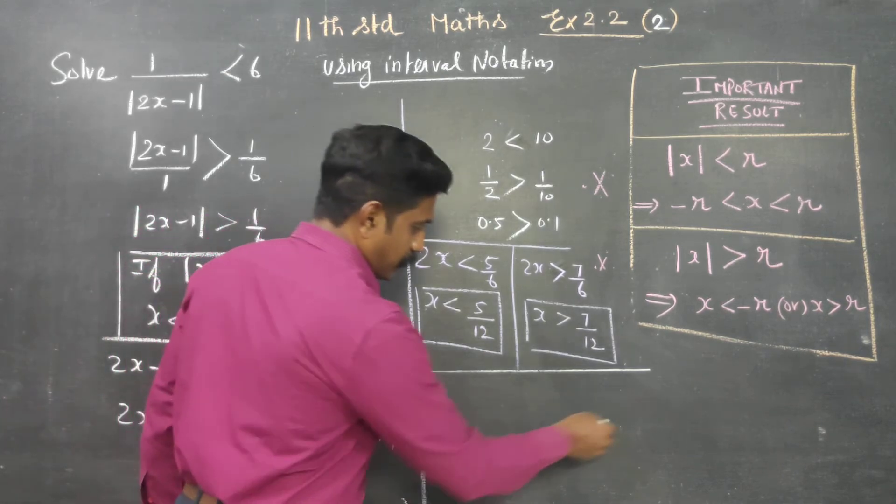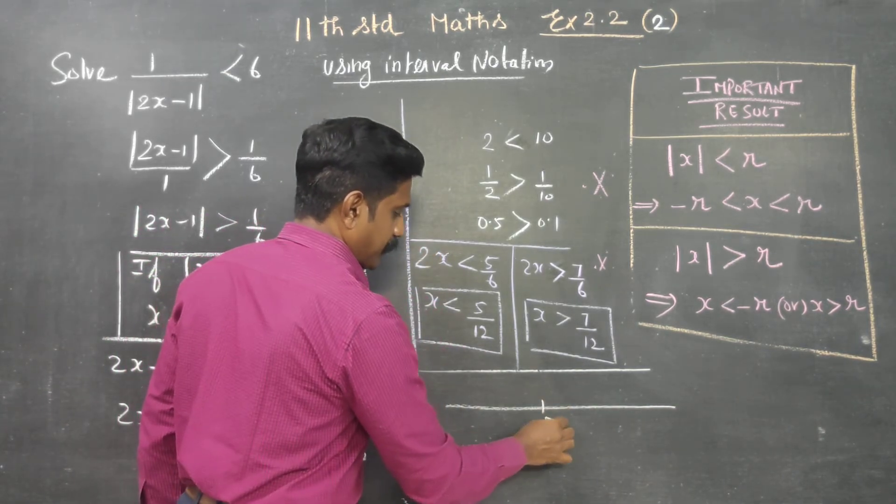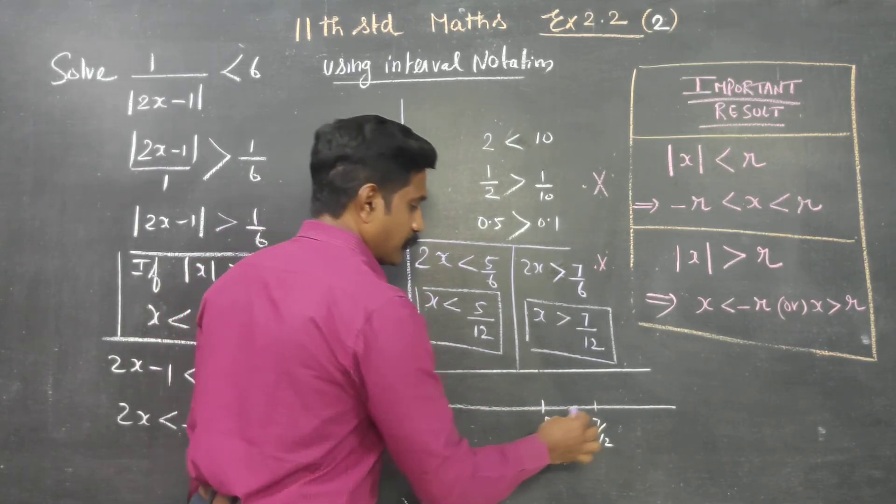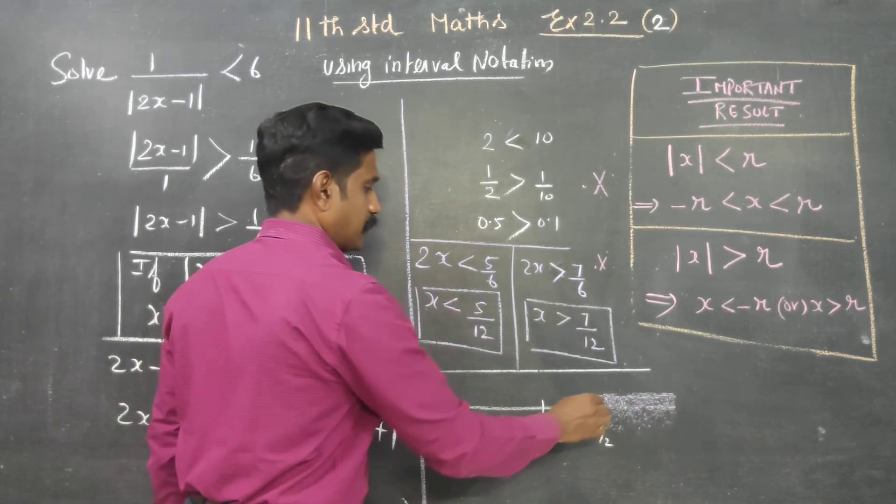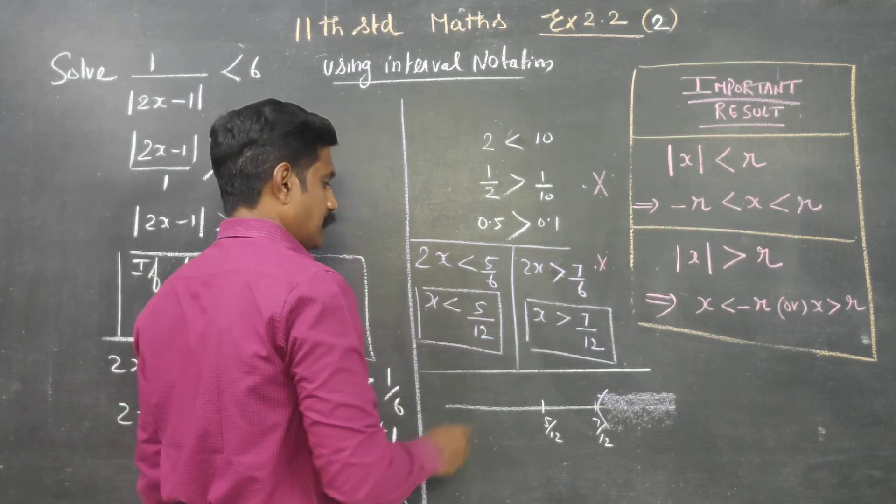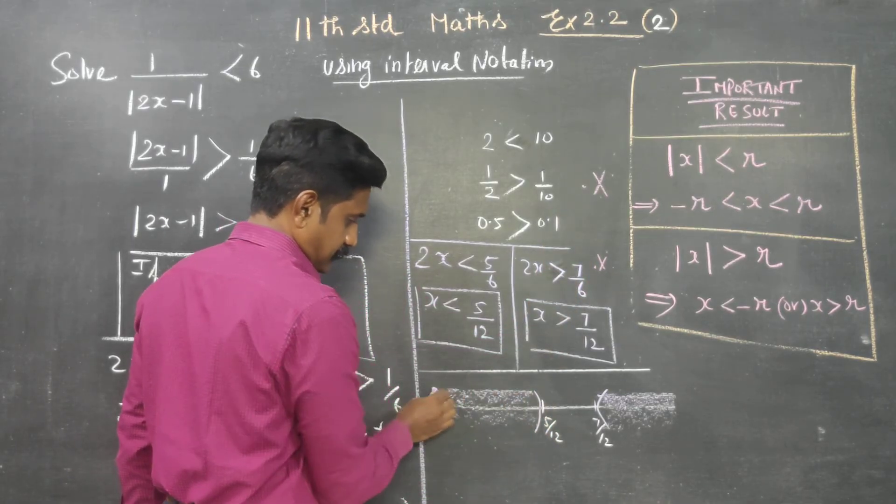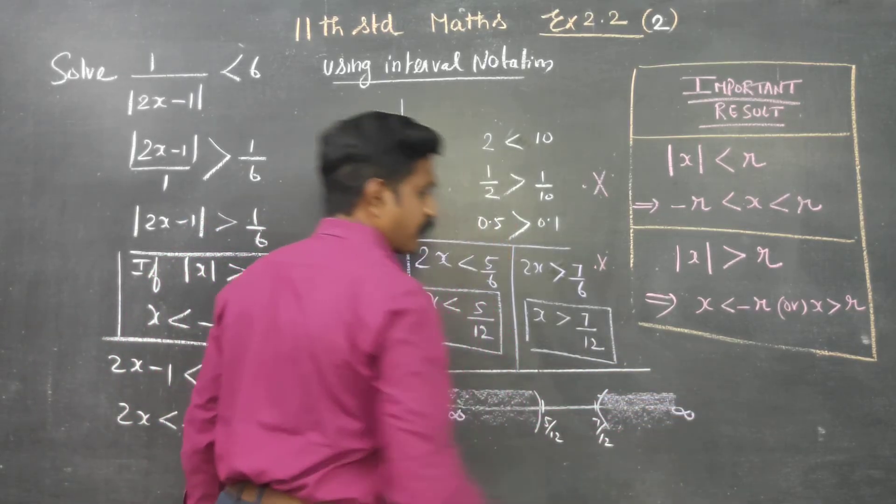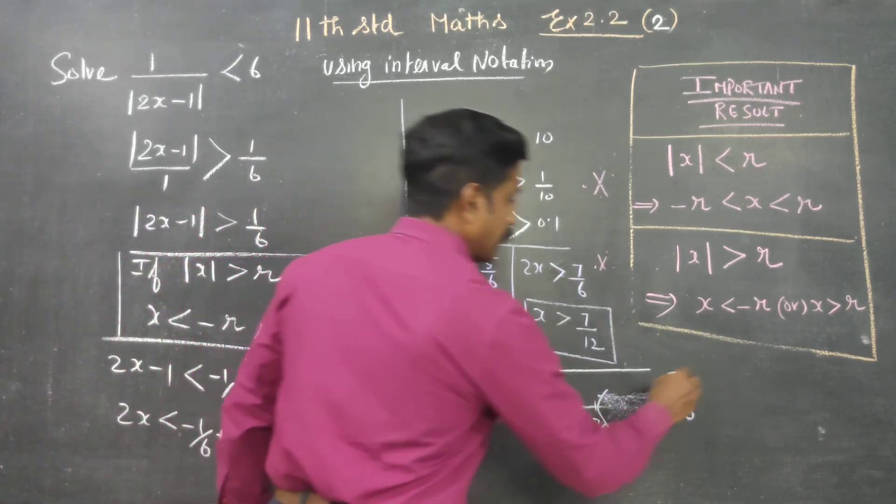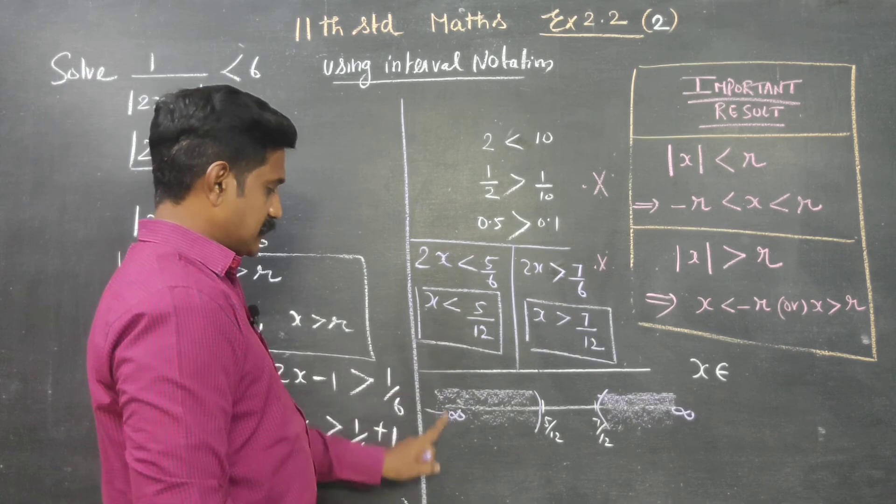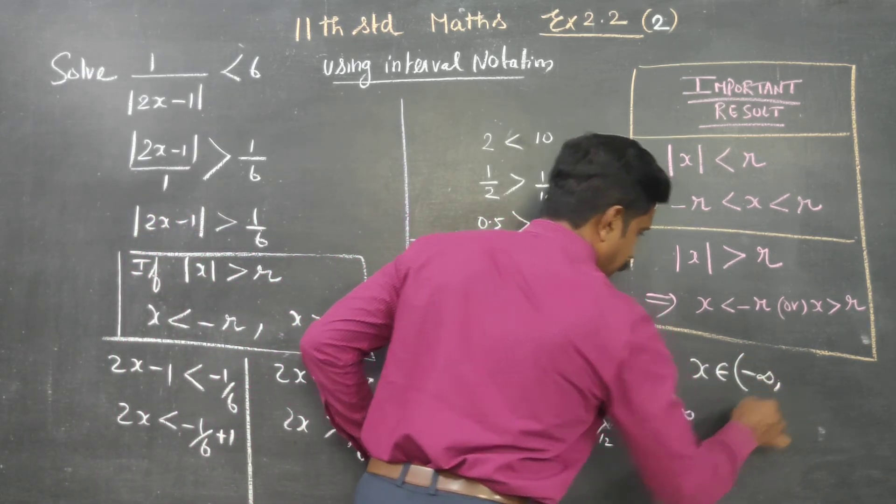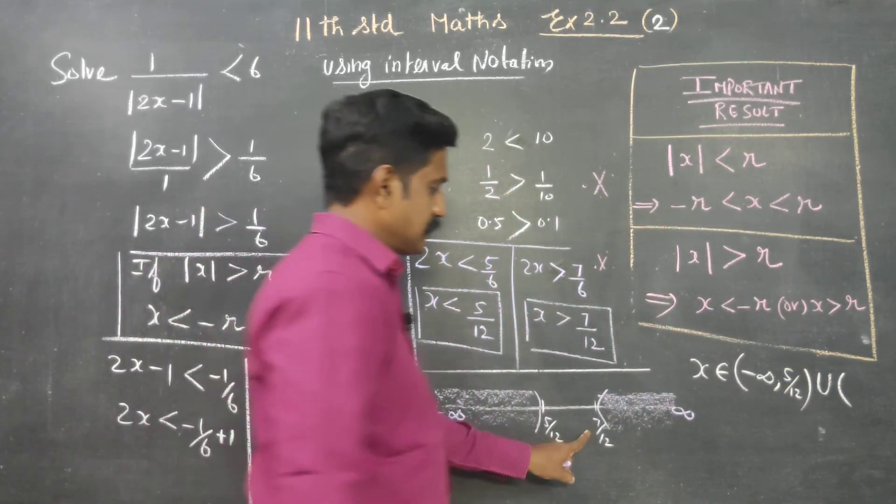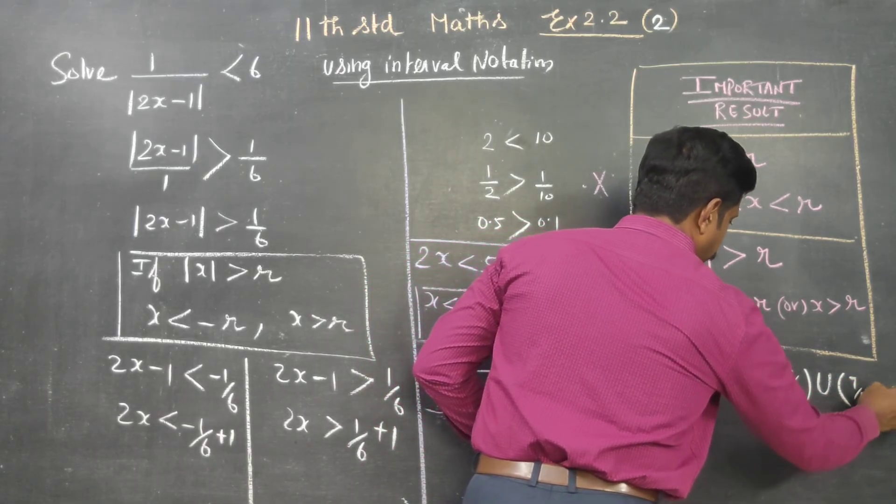I am going to draw a diagram, this is my real line. This is 5 by 12, 6 by 12, 7 by 12. Greater than 7 by 12 is this area. Less than 5 by 12 is this area. This answer is minus infinity on the left hand side, plus infinity on the right hand side. And another answer, 7 by 12 to plus infinity.